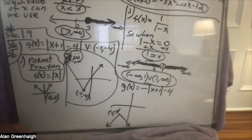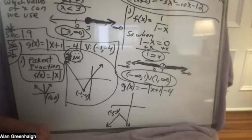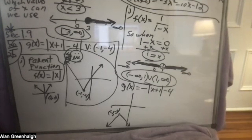That negative in front of the function causes the parent function to go upside down — instead of opening upward, it opens downward. That's the only question I gave from Section 1.9.